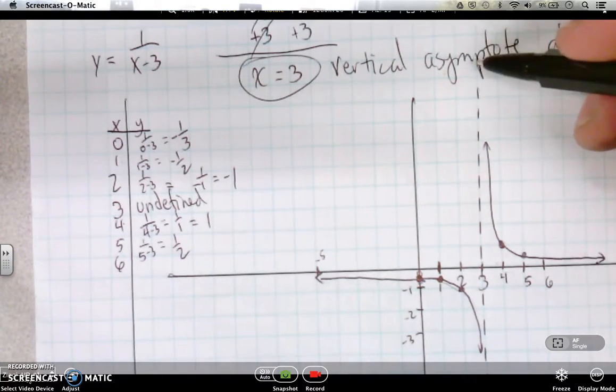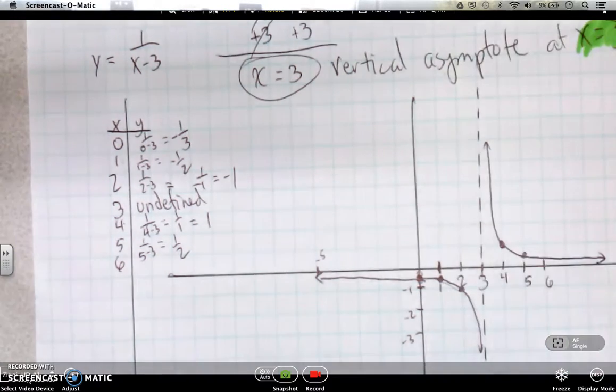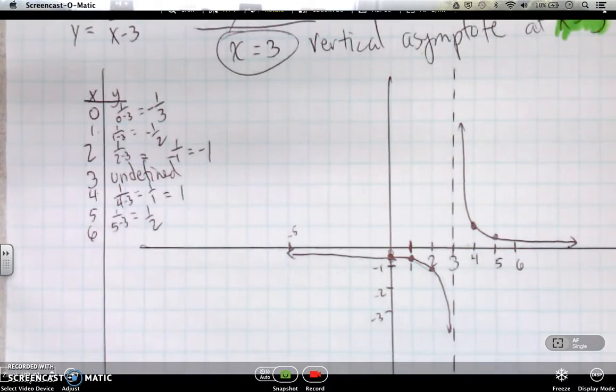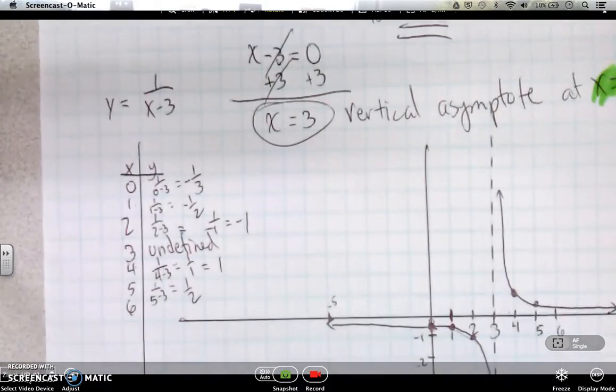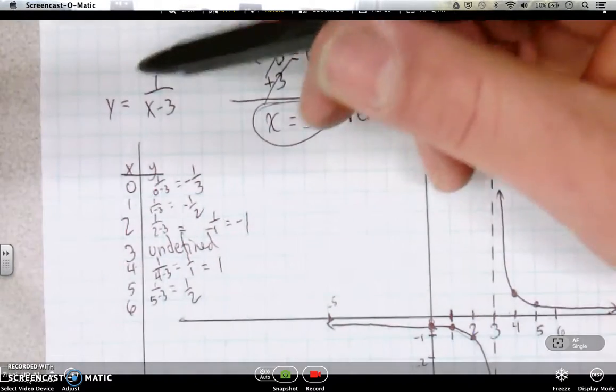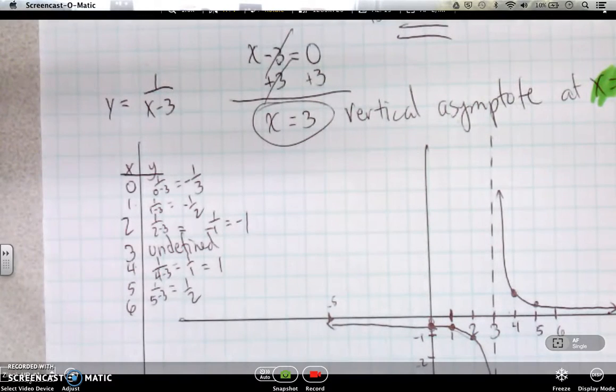So at the asymptote, it shoots to infinity on this side. Shoots down towards negative infinity on that side. So most of these graphs are going to have vertical asymptotes. Not always, but all the ones we will encounter in Algebra 2.